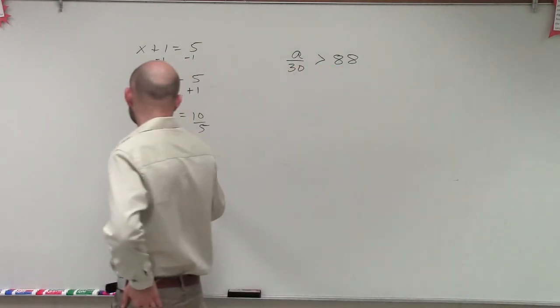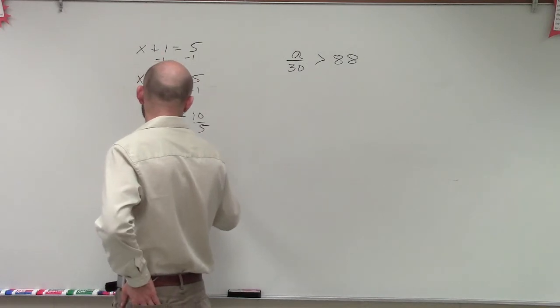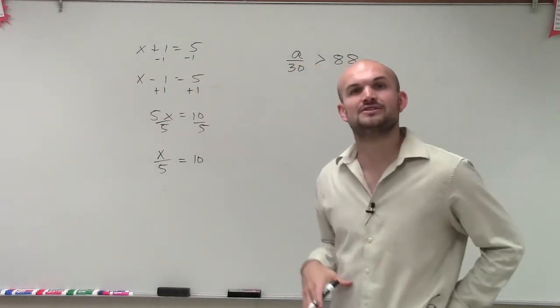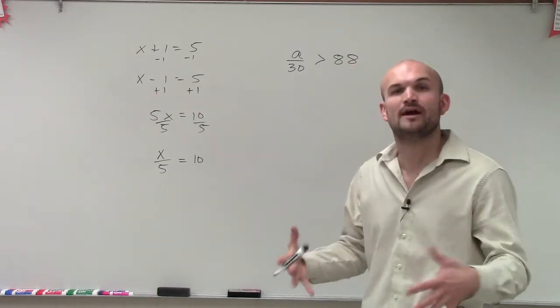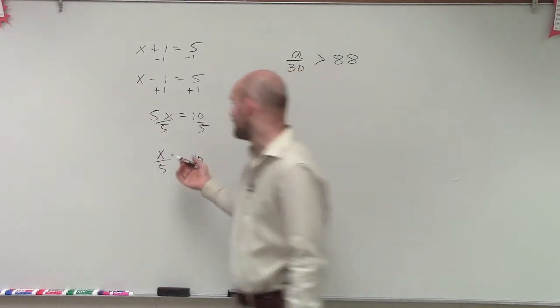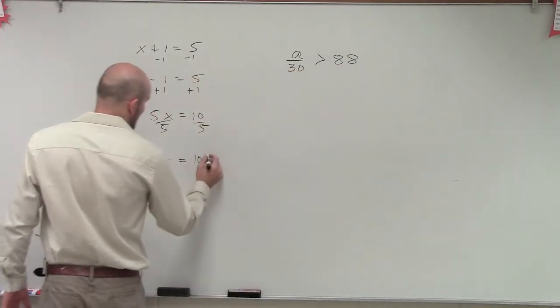However, the one that a lot of us get stuck on is when I have x divided by 5 equal to 10. And we forget what inverse operations we're going to have to use. And remember, when solving for a variable, we want to isolate the variable. So we see that my variable is being divided by 5, so I'm going to have to multiply by 5 on both sides.